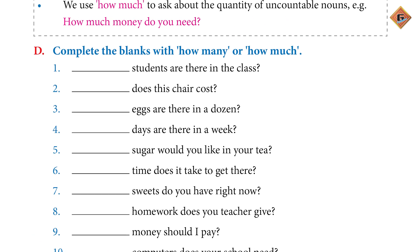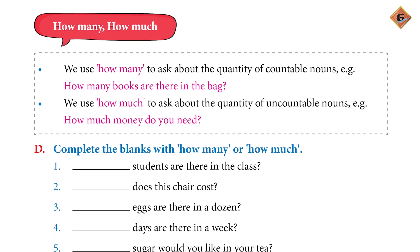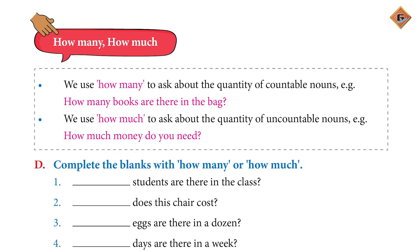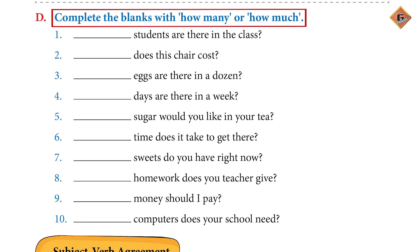Let's move to page number 97. Here we are talking about 'how many' or 'how much', which will help you recall countable and uncountable nouns. Question D says: complete the blanks with 'how much' or 'how many'.